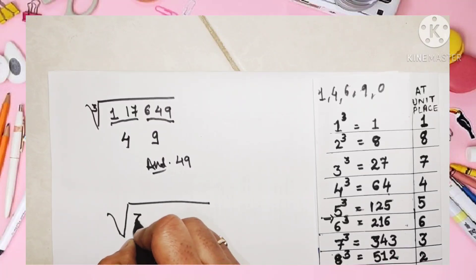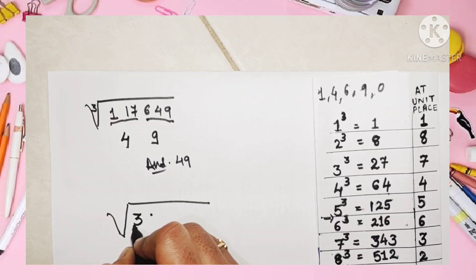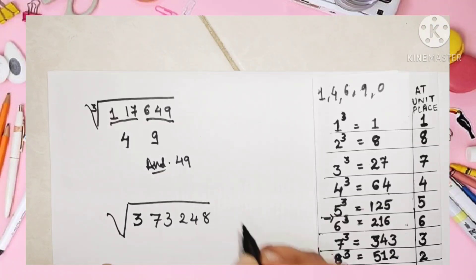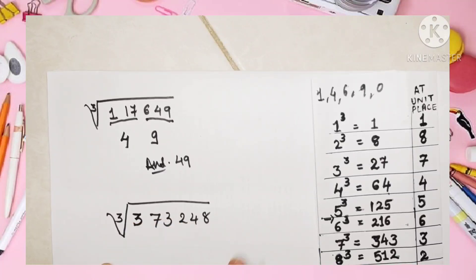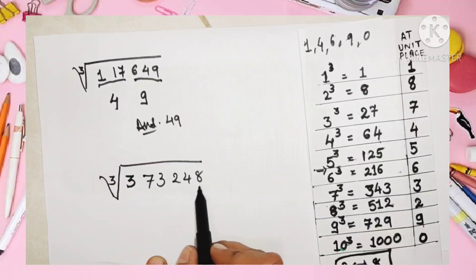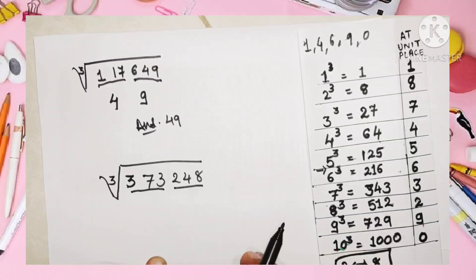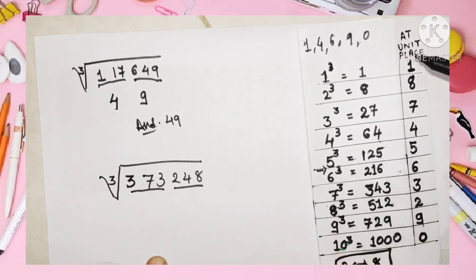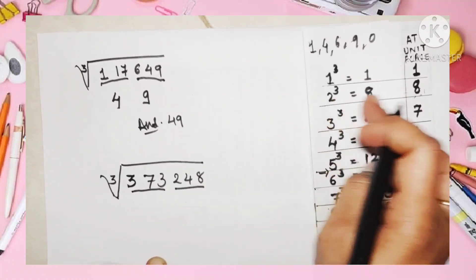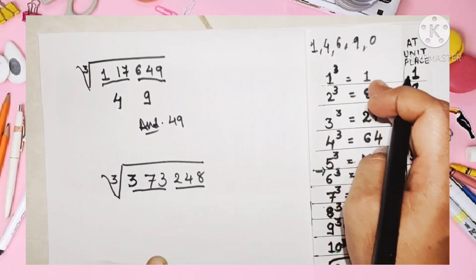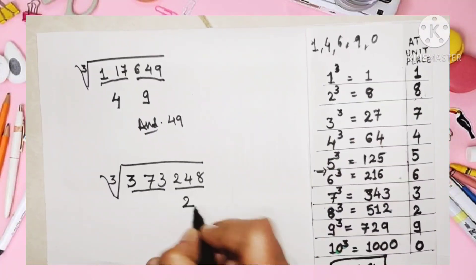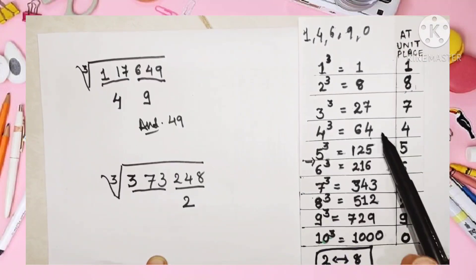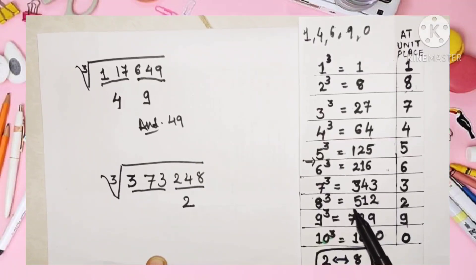Our second example is the cube root of 373,248. Again, we make groups of three digits from right to left: the first group is 248 and the second group is 373. In the first group, the unit digit is eight. Since the cube of two has eight at the unit place, we write down two.